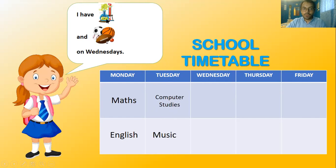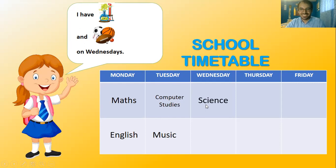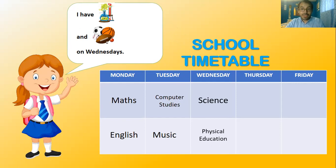Next one — I have... which one is this? On Wednesdays — miércoles. She says: I have Science — that would be nature or science. And the one where you do sports and everything? Physical Education — P.E. I have science and physical education on Wednesdays.